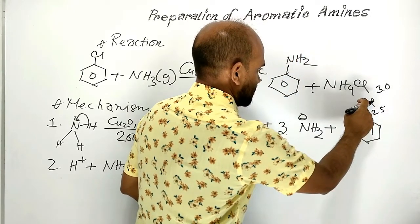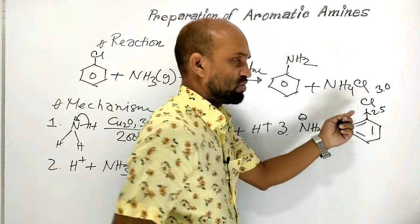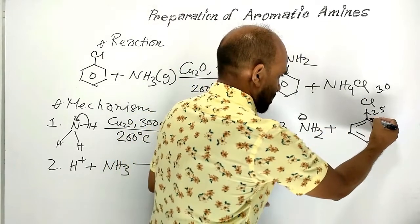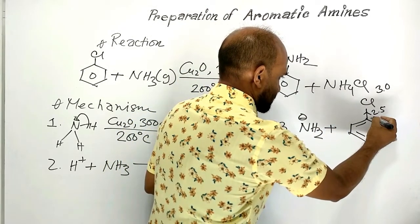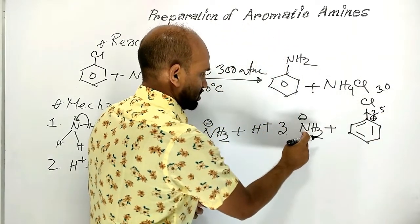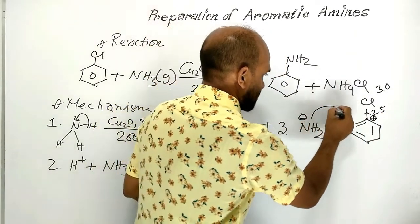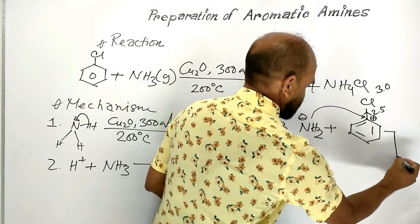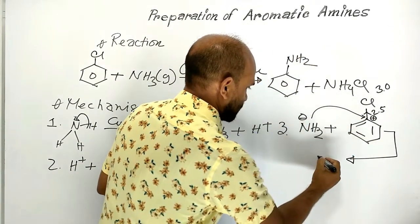Because of the higher electronegativity of chlorine, this carbon gets positively charged and as a result amide ion can attack this carbon and then this is formed.